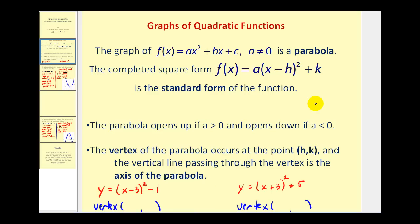One of the things we have to be very careful about is identifying the correct sign of the x and y coordinates of the vertex, which are identified by h and k, but it has to be in the form of the quantity x minus h squared plus k. So if we have x minus h, we use a positive value for h, and if it was x plus h, we use a negative value of h.